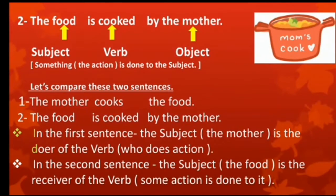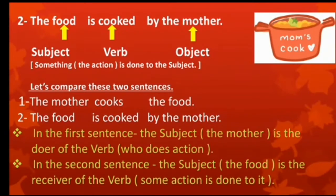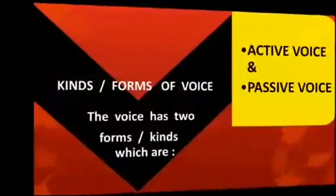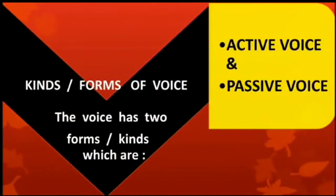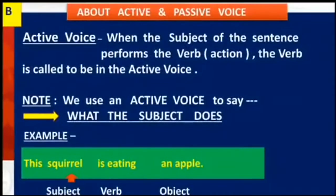In the first sentence, the subject is the performer of the verb. In the second sentence, the subject is the receiver of the verb. The voice has two forms which are active and passive. Starting with the active voice: when the subject of the sentence performs the verb, the verb is called to be in the active voice.